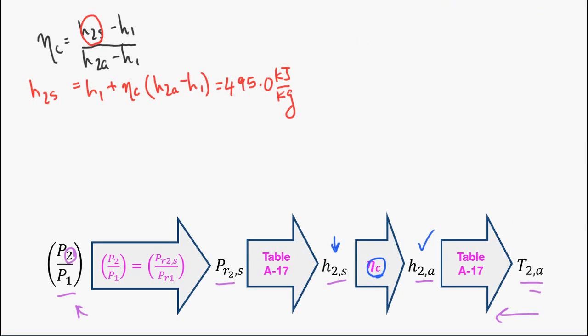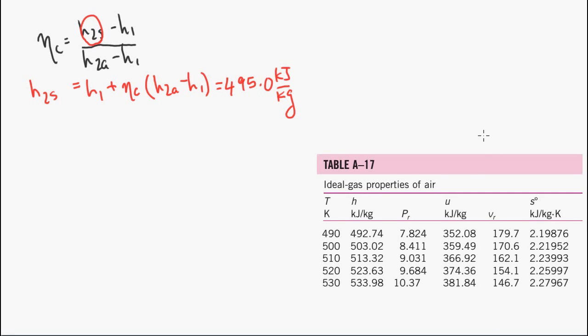Going back to our process, we need to use the table to find this value. If we pull up our table, you can see here that for an enthalpy of 495, it's somewhere between these two values here. So we need to do interpolation using these values to find the PR.